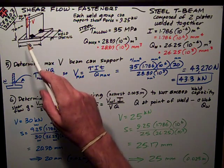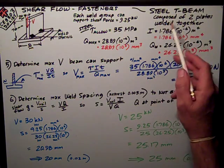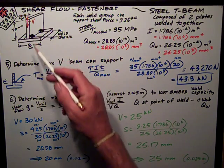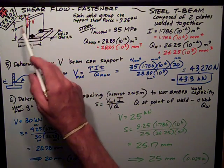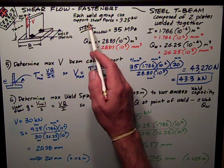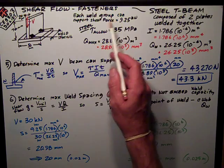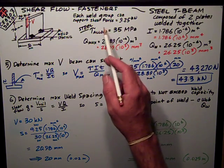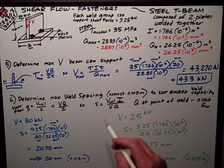What we've got here is a steel T-beam composed of two plates welded together with an intermittent weld. We've got the dimensions of the plates, and then we say that each weld group, that means a weld on either side of the web, can support a shear force of 9.25 kilonewtons.